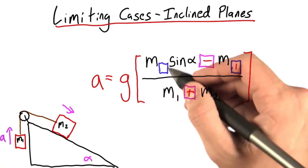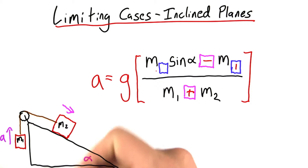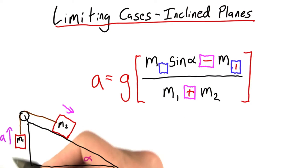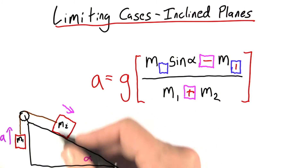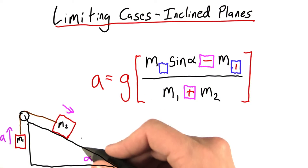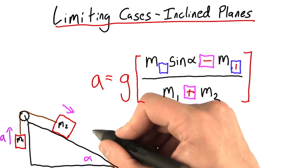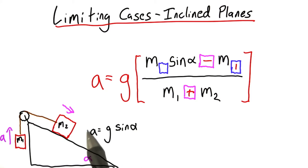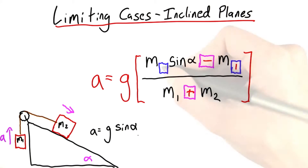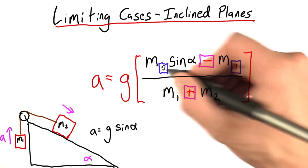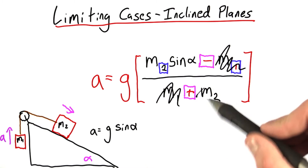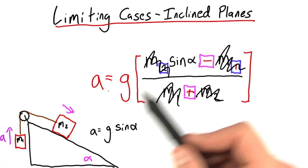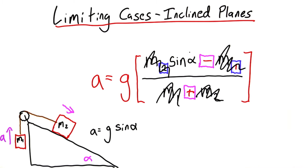To figure out what goes in this box, let's imagine the limiting case where this mass is 0. Well, if this mass were 0, we'd just have a block on an inclined plane. And in the lesson I just gave you on inclined planes, you saw the acceleration in that case should be g sine alpha. Well, if we make this a 2, the m1s are both 0, m2s will cancel out, and we have a equals g sine alpha. It works.